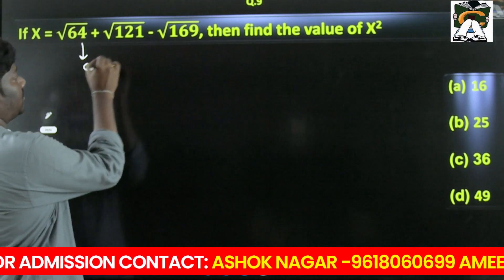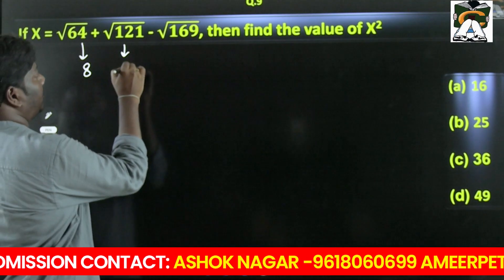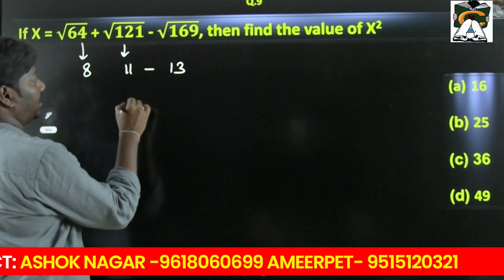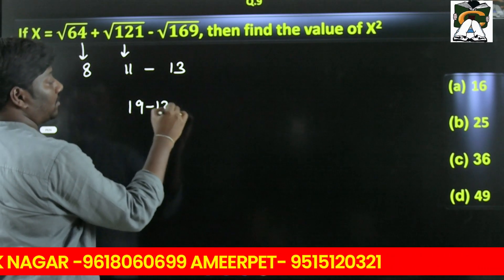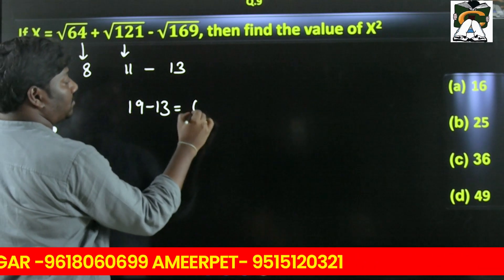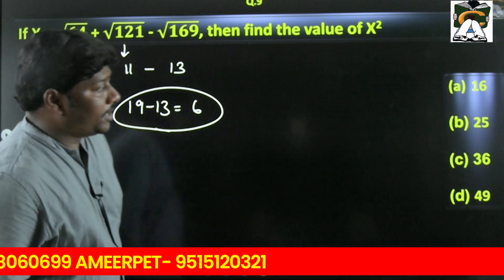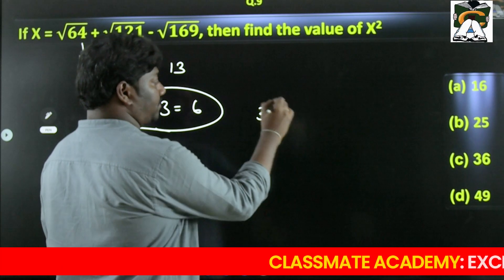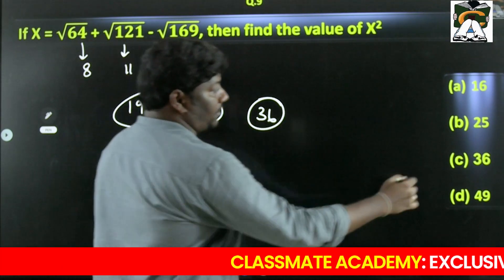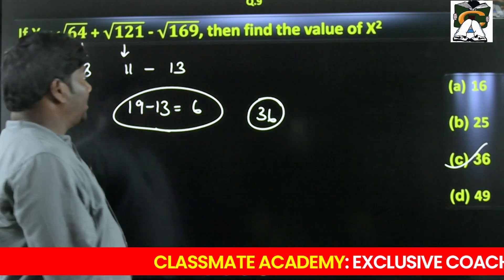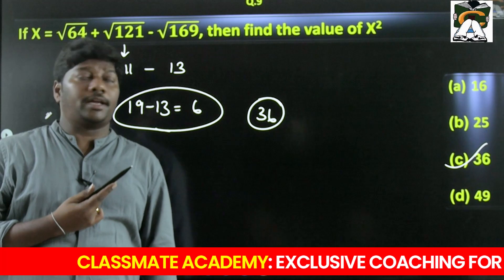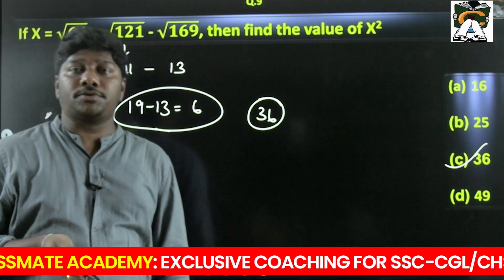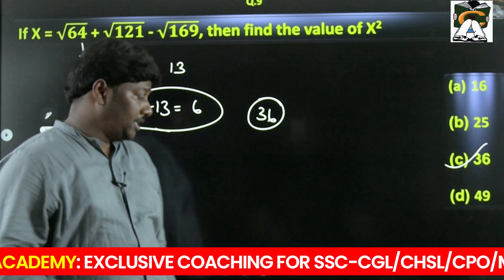For this question: √64 is 8, so we have 8 + 11 = 19, then 19 − 13 = 6. The answer is 6² = 36. It is simply 8 + 11 = 19, minus 13 gives 6, so 6 squared — that's it.